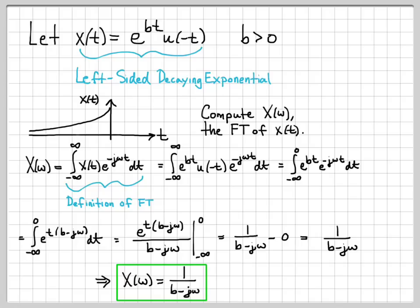If you prefer to work in linear frequency, we know that omega and the linear frequency variable f are related by the equation omega equals 2 pi f. So you could just replace omega with 2 pi f and have this Fourier transform as a function of linear frequency f, if so desired.